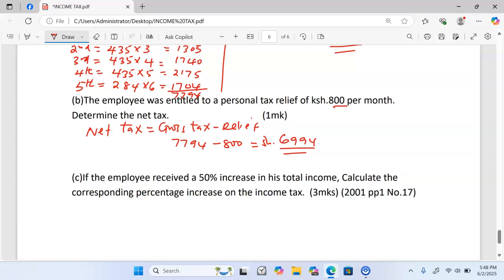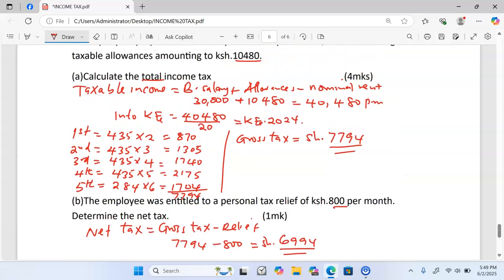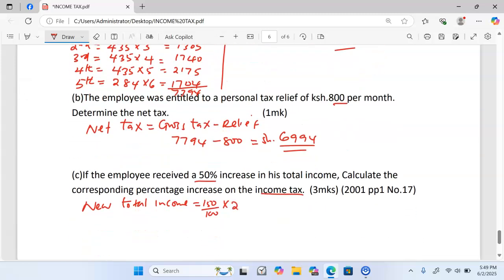We can now move to part C. If the employee received 50% increase in its total income, calculate the corresponding percentage increase on the income tax. The first thing is to calculate the new total income. New total income will be obtained by simply taking 50% excess of 100, which is 150% times the taxable income which was 2024 in Kenyan Pounds, and this one is going to give us 3036.